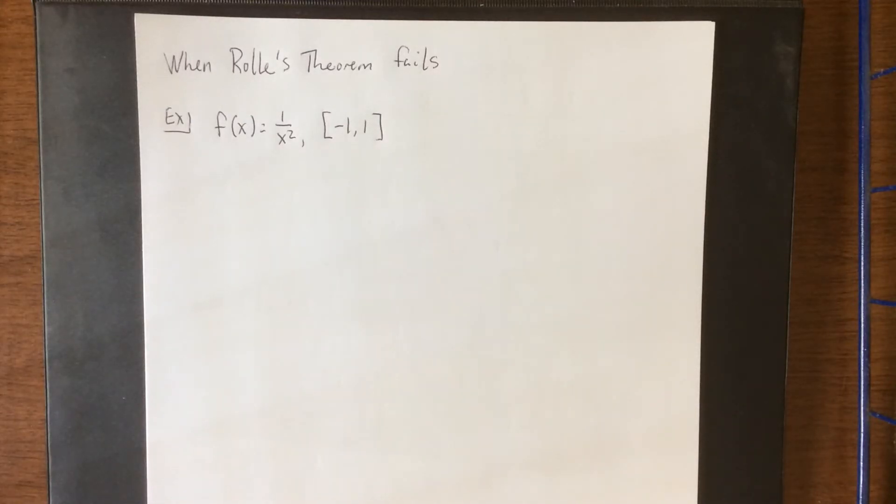So next up here are a couple of examples where Rolle's theorem fails even though it doesn't necessarily look like it should.